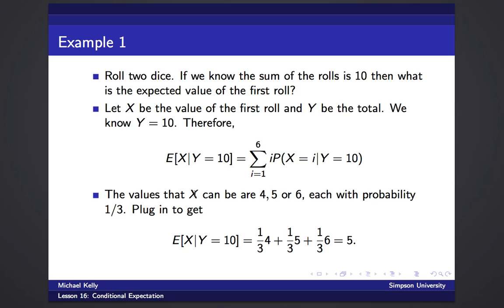The only values that x could be, if the sum is 10, is 4, 5, or 6. And each of those rolls is still equally likely, so now they all have probability 1 third. And plugging that into the formula, it's now a 1 third chance of a 4, a 1 third chance of a 5, and a 1 third chance of a 6, which sums to 5.